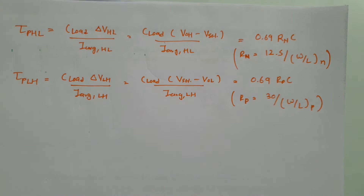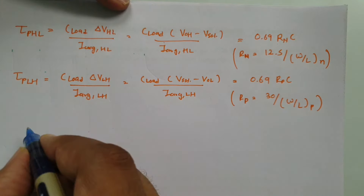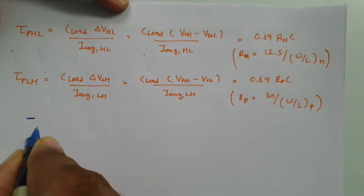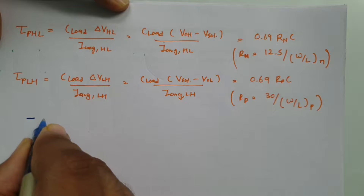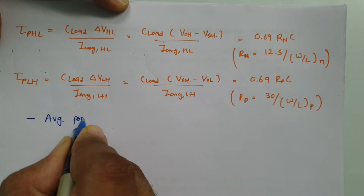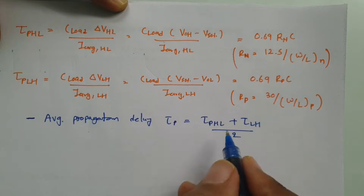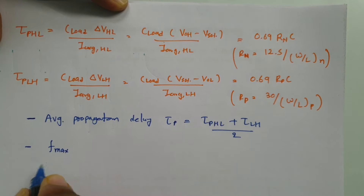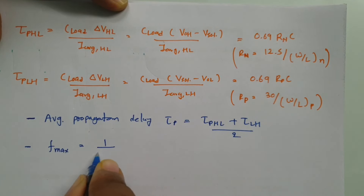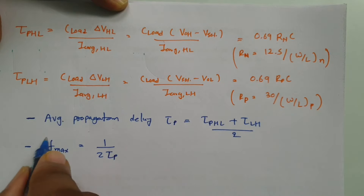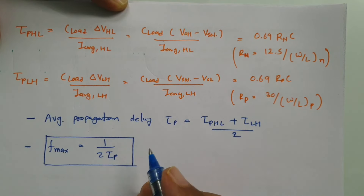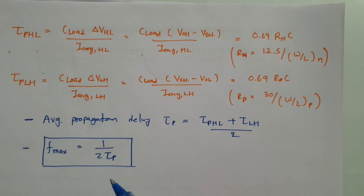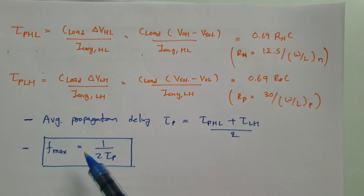One more important point: propagation delay limits the maximum operating frequency. Once you have the average propagation delay t_p, the maximum operating frequency of the integrated circuit is 1 divided by 2 × t_p. You cannot operate the integrated circuit beyond this frequency. Therefore, minimizing propagation delay directly increases the maximum usable frequency.